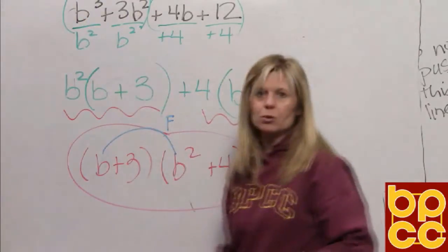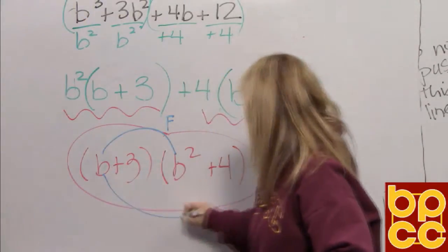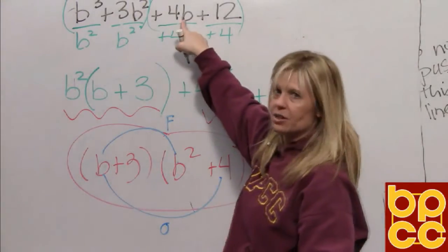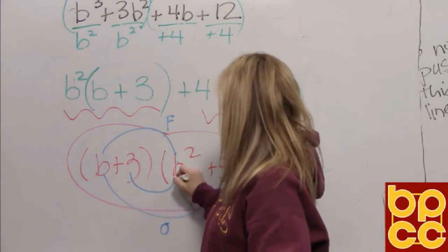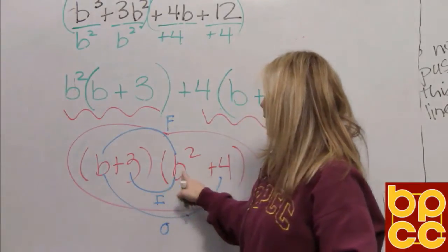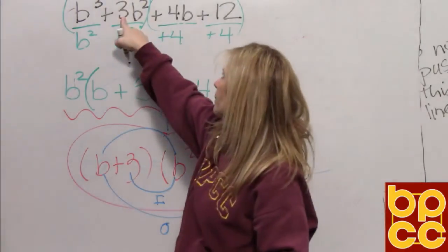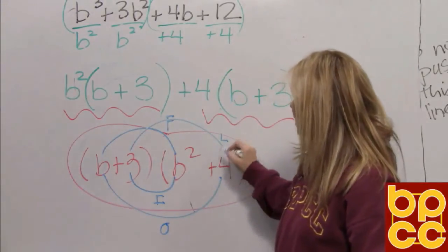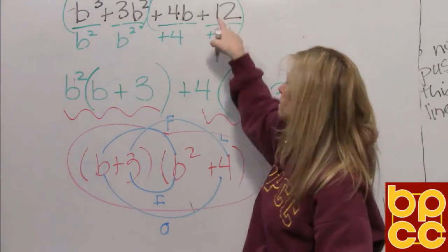First would be B times B squared, which is B cubed. Your outers would be B times a positive 4, positive 4B. Your inners would be positive 3 times B squared, positive 3B squared. And your last, positive 3 times positive 4, positive 12.